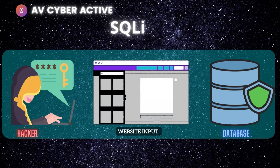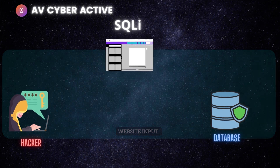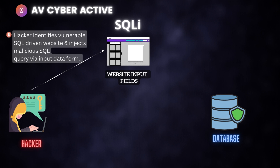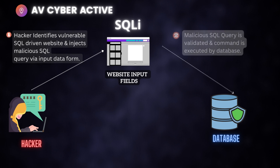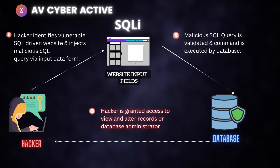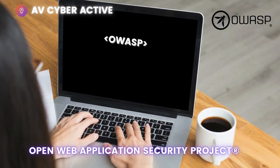There are three parties involved: the hacker, the vulnerable website, and the database. The hacker first identifies a SQL-driven website and injects a malicious SQL query via a data input or web form. In step two, the malicious SQL query is validated and the command is executed at the backend database. Finally — the scariest part — the hacker is granted access to view or alter records or data as an administrator.